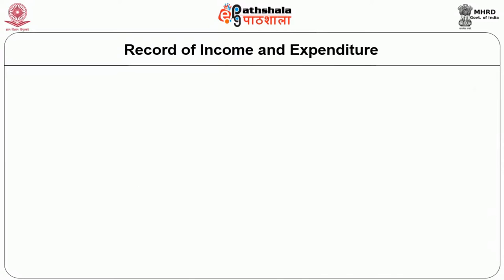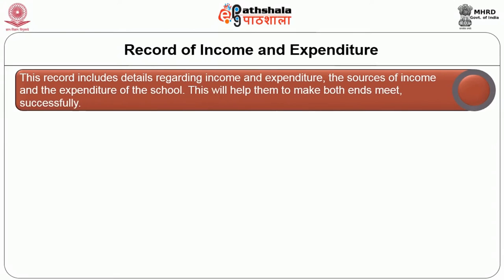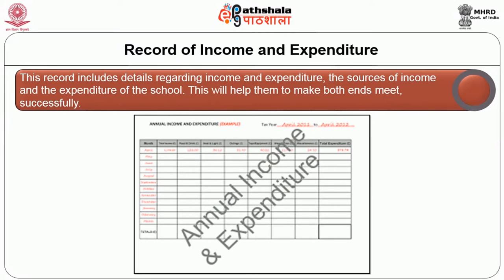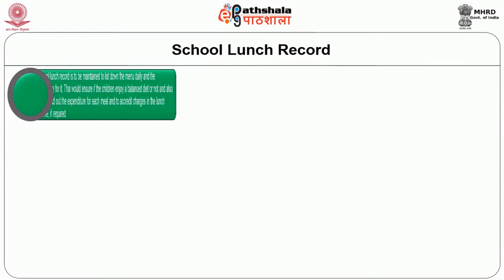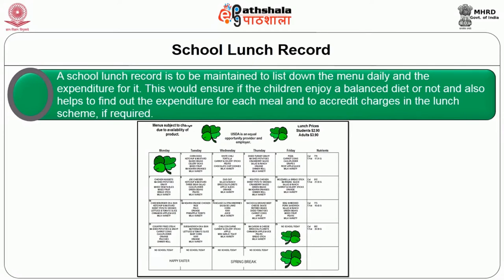The Record of Income and Expenditure includes details regarding whether both ends meet successfully. A School Lunch Record is to be maintained to list down the menu daily and the expenditure incurred for it. This would ensure if the children are enjoying a balanced diet or not, and also helps to find out the expenditure for each meal and to make changes in the lunch scheme if required.